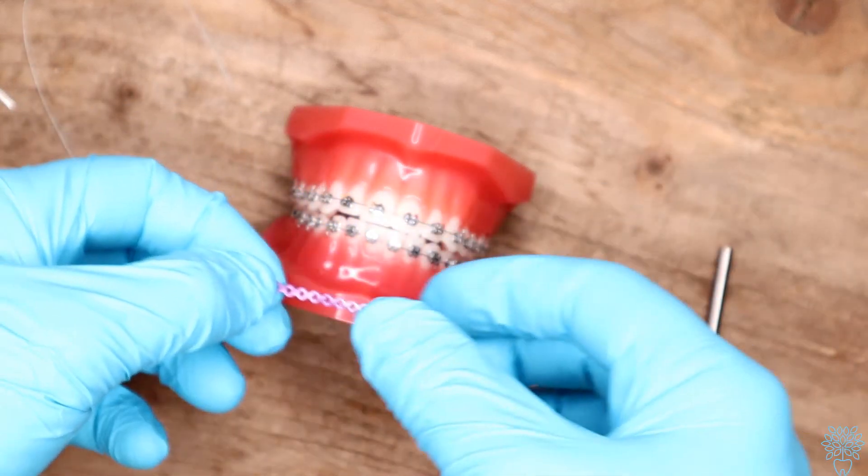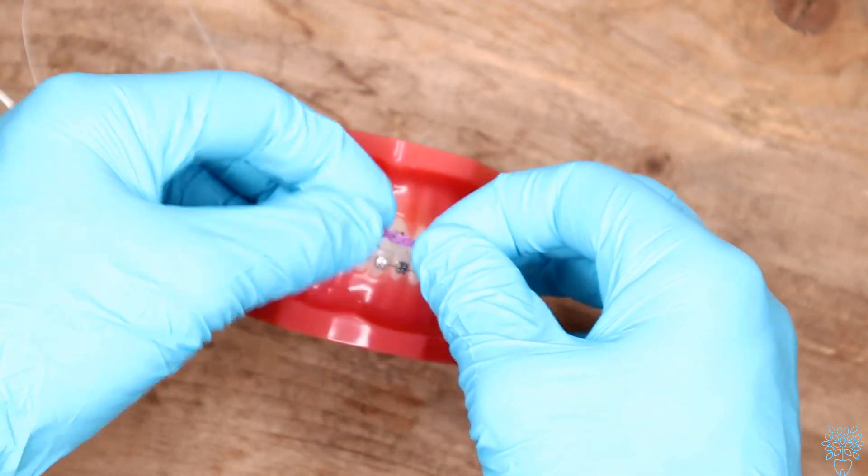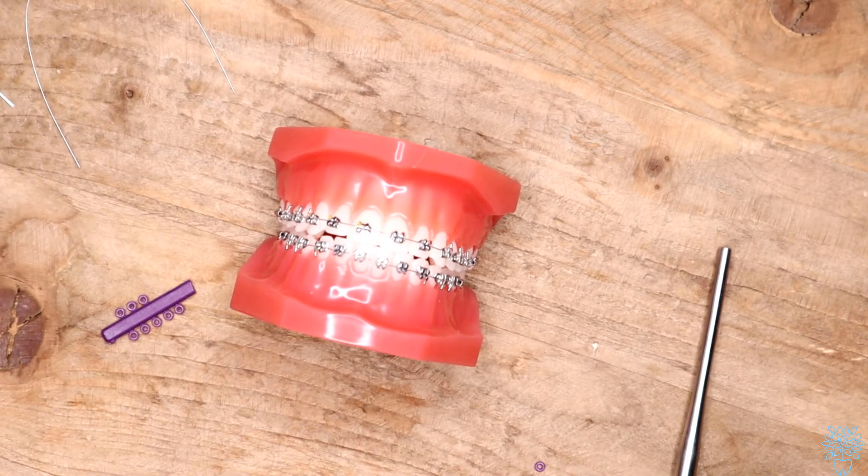So you can imagine if we're stretching this out, putting it on the teeth, over time, boom, it wants to get small again. And that's basically what power chains are doing. So if you come in and you have some gaps, you have a gap in the middle, we'll put it on a couple of teeth, boom, stretch it out. And then the teeth will want to come together again. So now you're learning the basics.